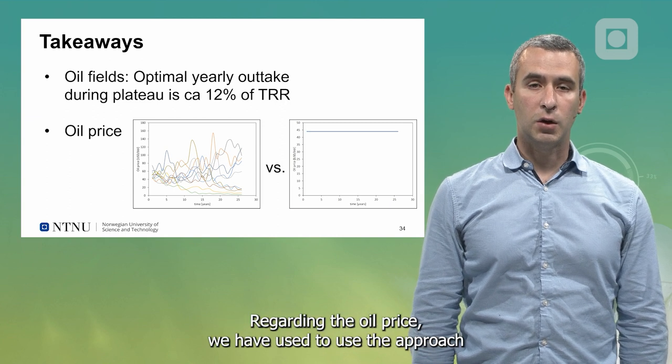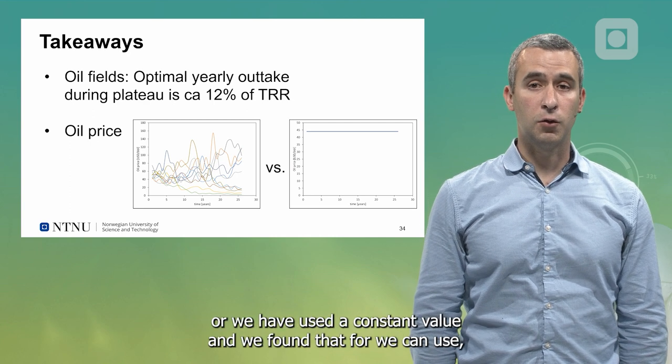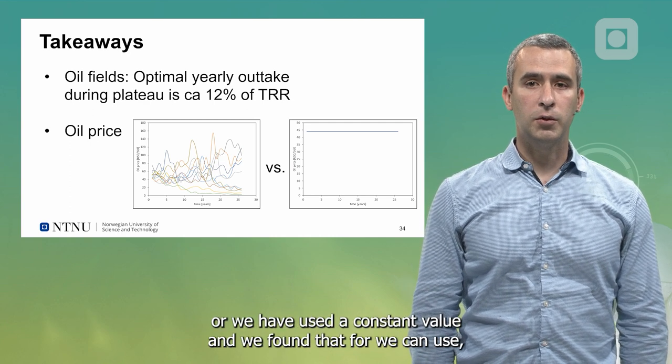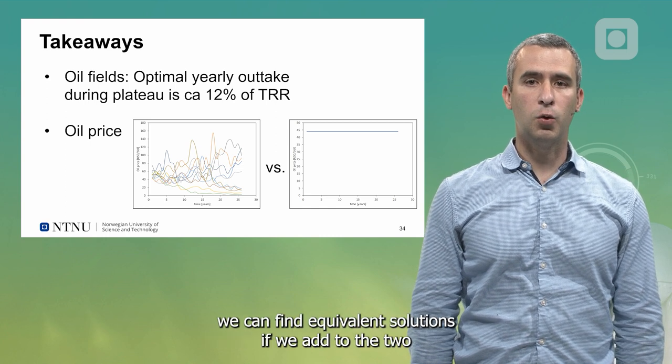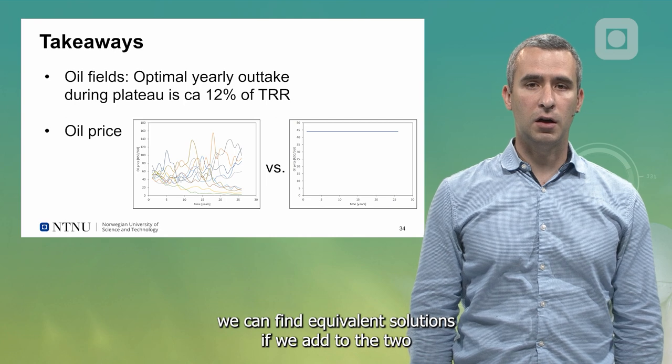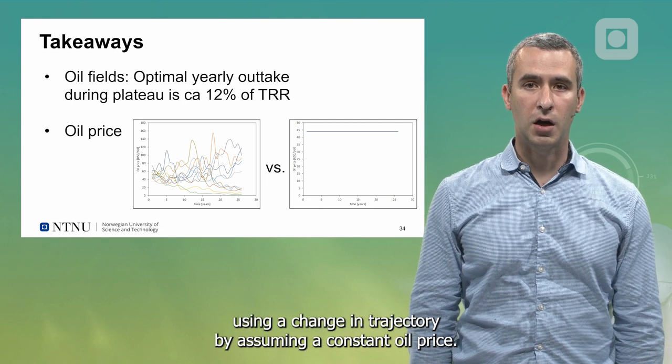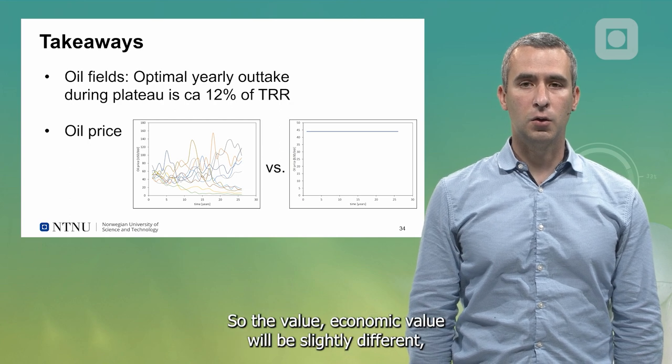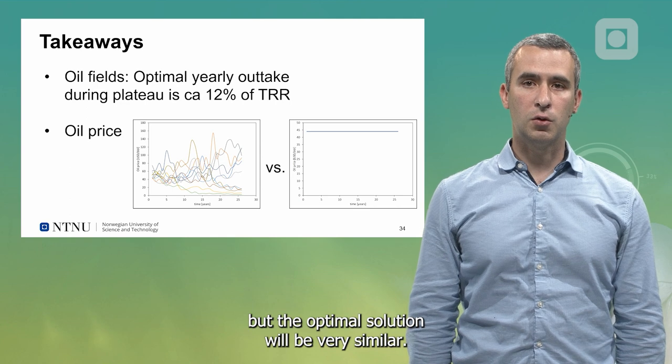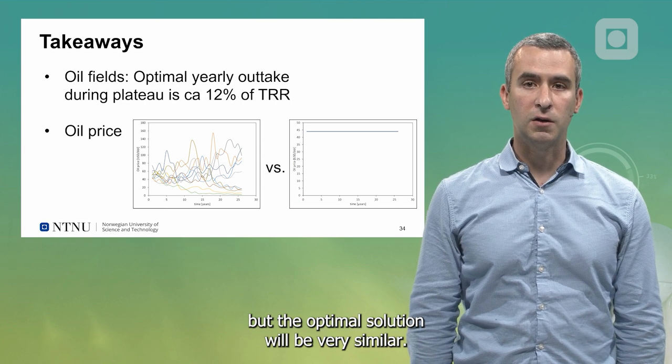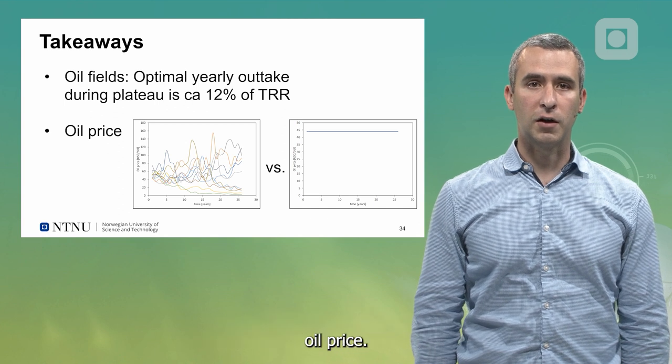Regarding the oil price, we have used, here you see a plot of the oil price with time, and we have used trajectories or a constant value. We found that we can find equivalent solutions to using a change in trajectory by assuming a constant oil price. The economic value will be slightly different, but the optimal solution will be very similar. So actually you could use that as a simplified approach of a constant oil price.